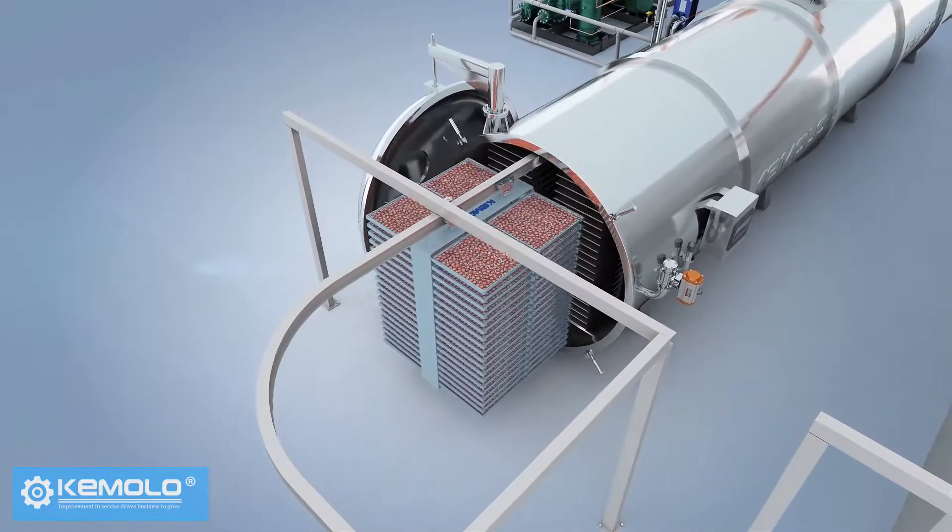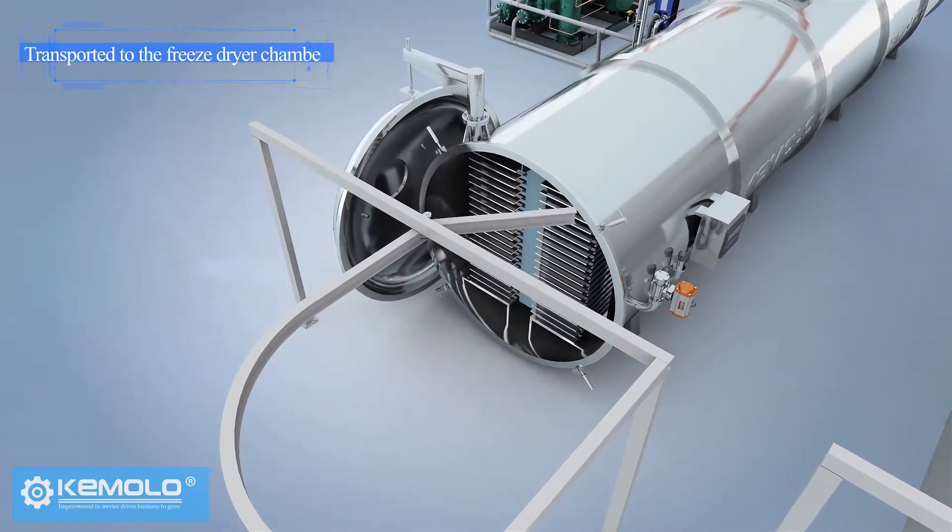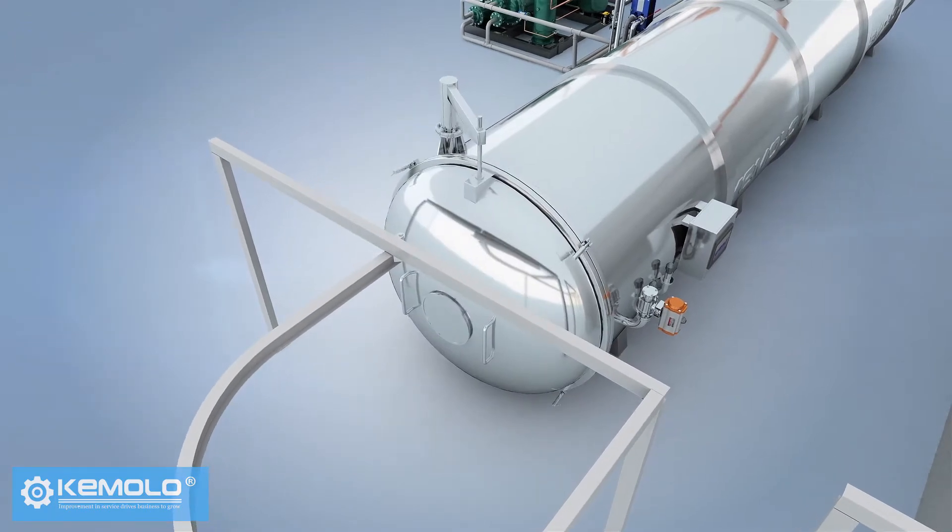The frozen material is then transported to the freeze dryer chamber. The chamber is closed and it is ready to freeze dry.